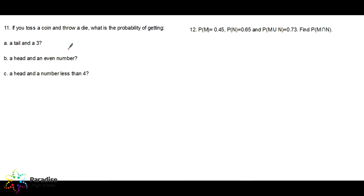If you toss a coin and throw a die, what is the probability of getting a tail and 3? Now we have a different situation: two different events are taking place — you toss a coin and you throw a die. So there are two different events. This is called independent events.